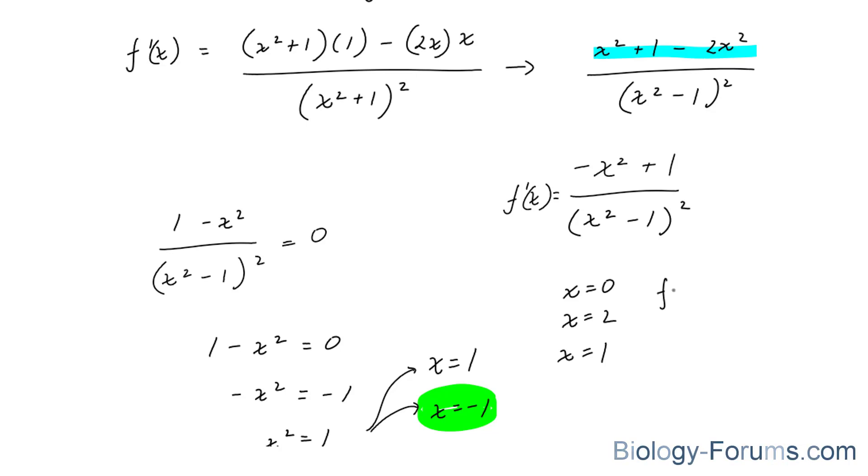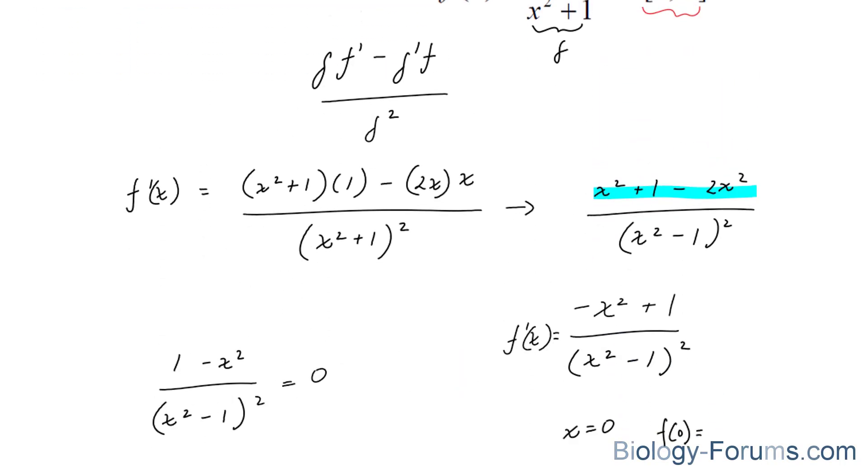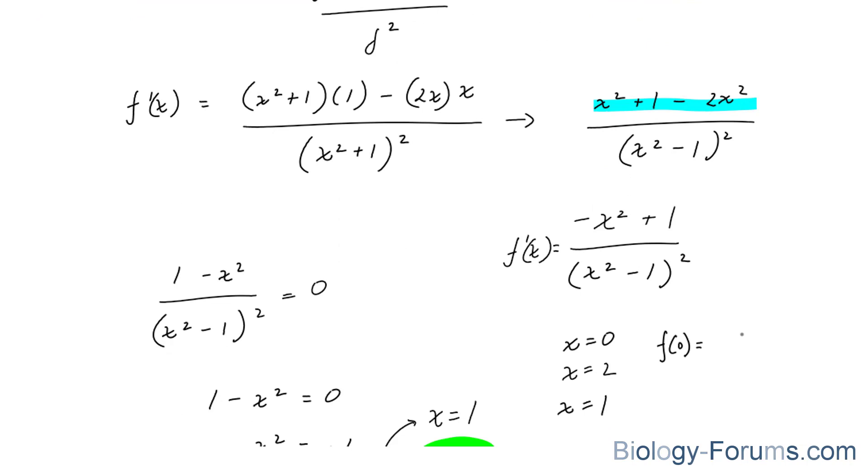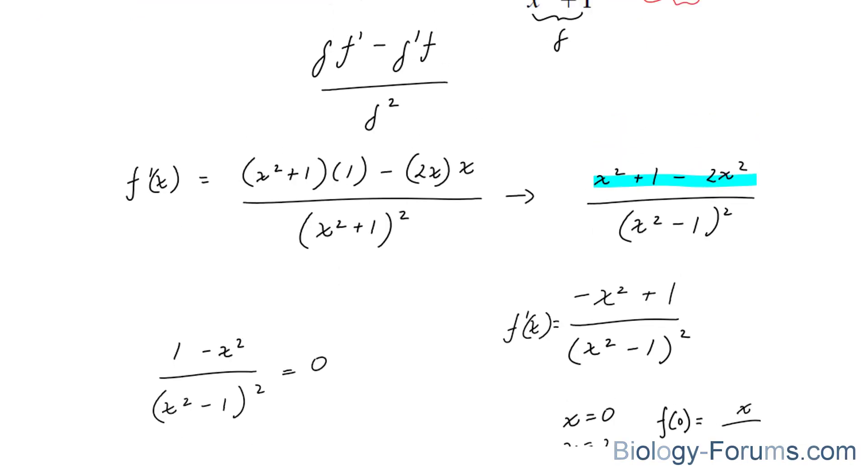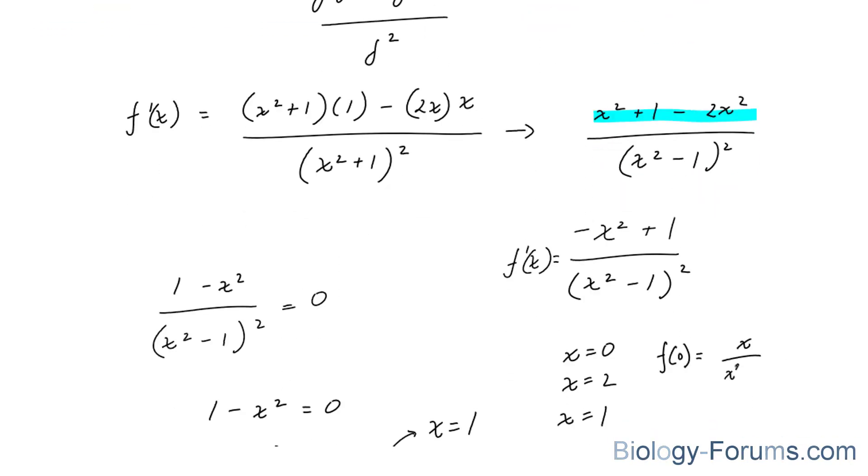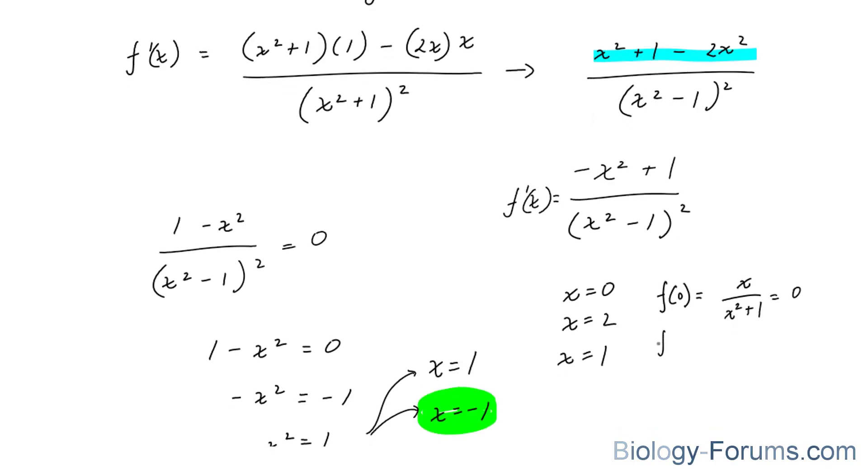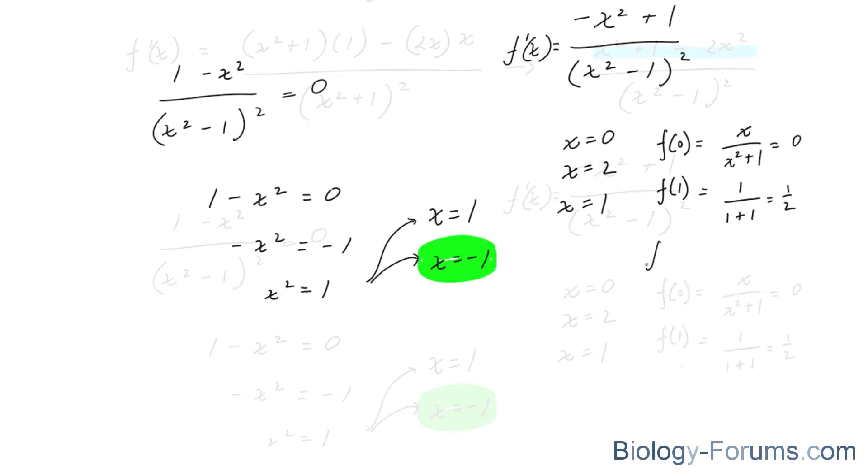So, f at 0 is equal to, and the function was, x over x squared plus 1. We're going to set this equal to 0, and we end up with 0. Let's try f at 1. That gives us 1 plus 1. That gives us half. So, so far, this is the maximum, and that's the minimum.